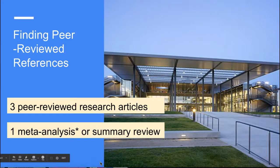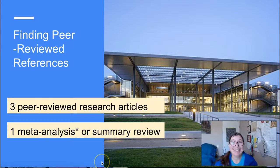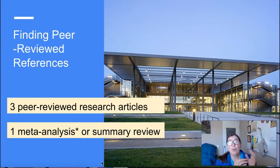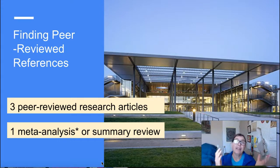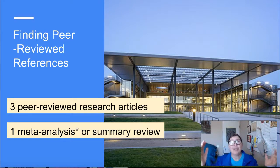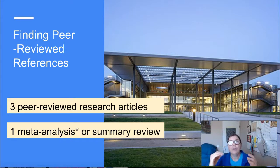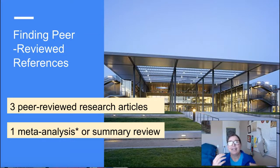You also want to find one meta-analysis or summary review — a summary review may also be referred to as a systematic review. A meta-analysis takes all the research done on a topic and combines it into one gigantic study with statistics. For instance, ten studies with 25-30 subjects each combine into a study with 300 subjects, making results more statistically significant. A summary review just summarizes conclusions and trends. The meta-analysis is better for this project, but if you can't find one, a summary review will do.